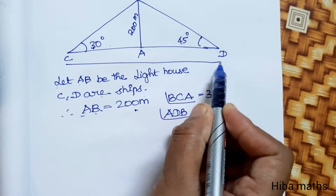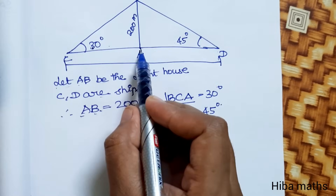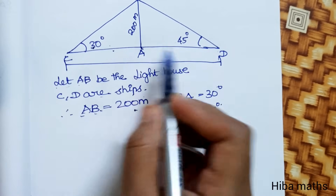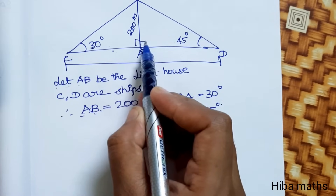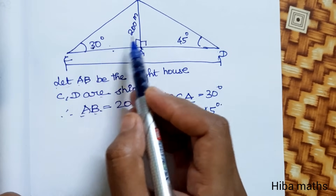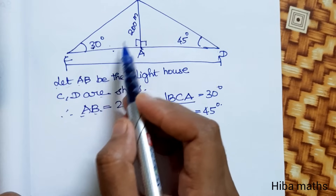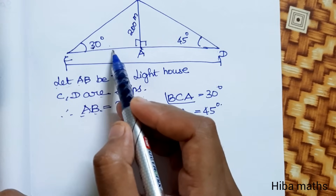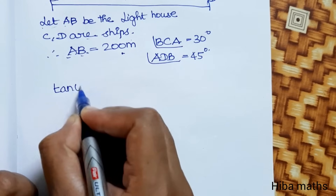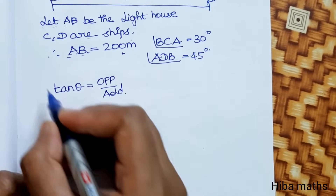We will find the full length by adding the distances. If you have the value, put theta with the opposite side. We will use the adjacent side. So opposite to adjacent is tan theta, which is equal to opposite divided by adjacent. This is the formula we will use.